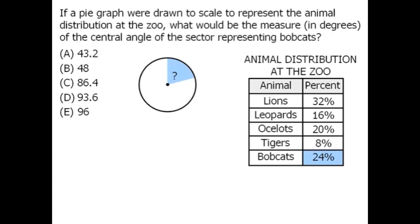Now we know that there are 360 degrees in a circle, so this sector angle shown here must be equal to 24% of 360.